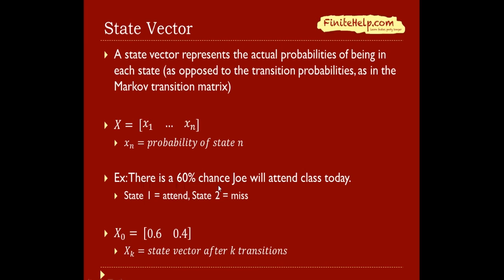For example, let's say there's a 60% chance that you will attend class today. State 1 is attend, state 2 is miss. Then we have X0 equals 0.6 and 0.4. The notation X sub-k is the state vector after k transitions. X0 is the initial state vector before any transitions, which is today's state vector.